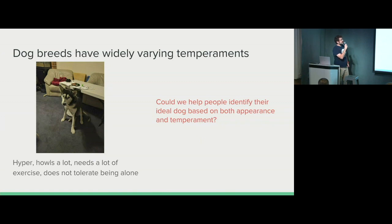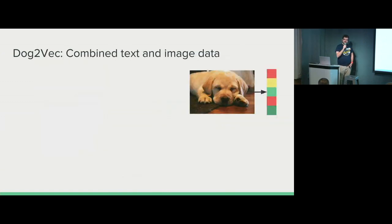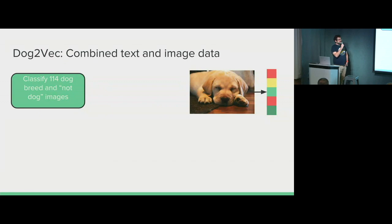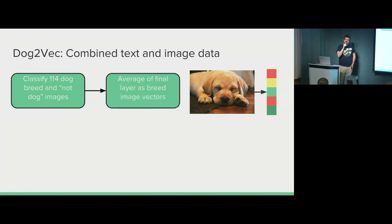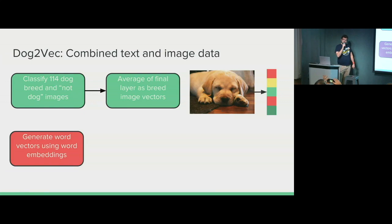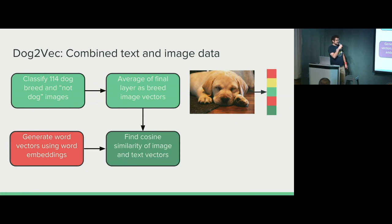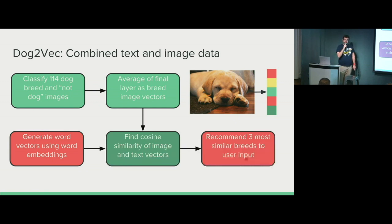To do that, I combined text and images in a system I called Dog2Vec. First, classify 114 different types of dog breed images and not-dog images, then average the final layer of that neural network to get dog breed image vectors, generate word vectors using word embeddings via GloVe, combine those and find the cosine similarity of image and text vectors, and finally recommend the three most similar dog breeds based on that user input.